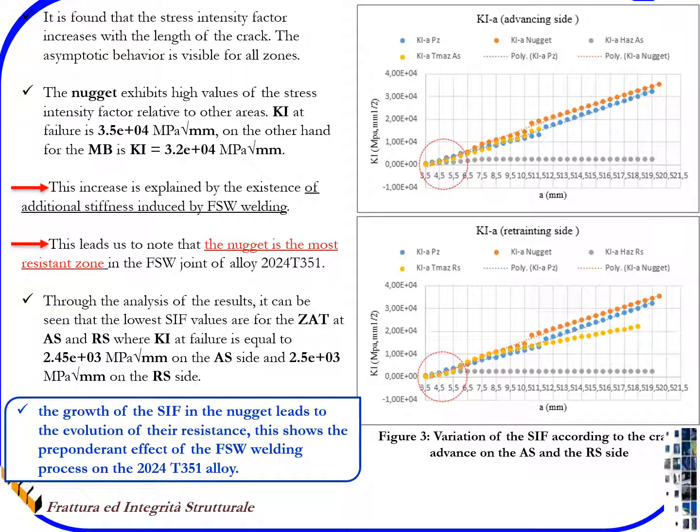This shows the preponderant effect of the FSW welding process on the 2025-T351 alloy.